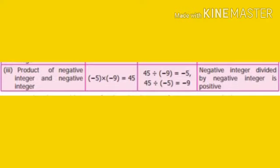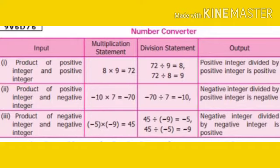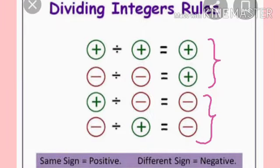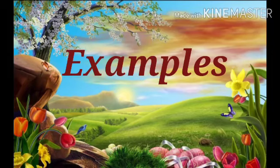We know that when we multiply two negative integers we always get a positive integer, but when the product is divided by one of the integers we get a negative integer. From the table we infer that division of two integers with the same sign gives a positive integer, and division of two integers with opposite signs gives a negative integer. Recall the dividing integer rules: same signs give positive, different signs give negative.